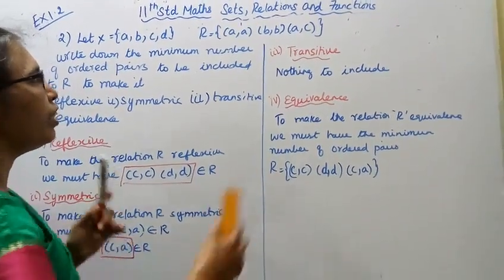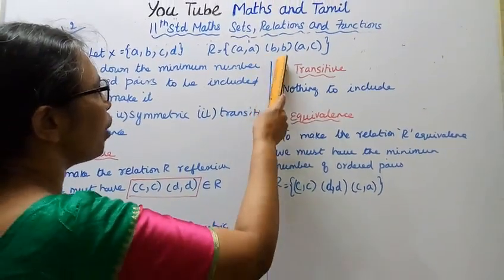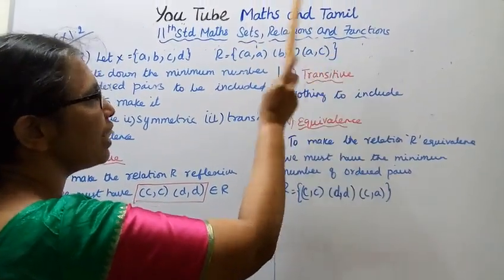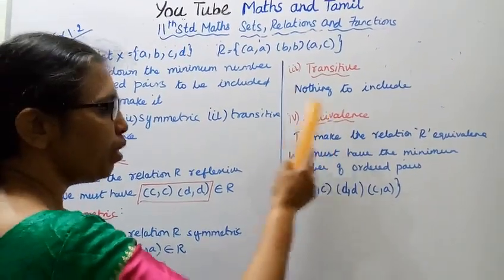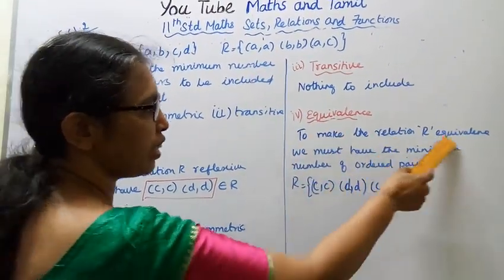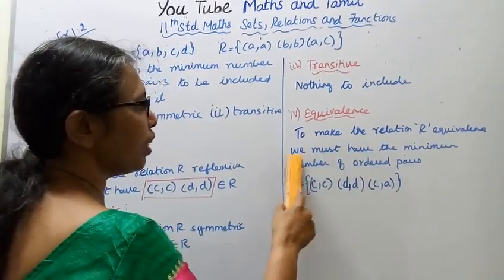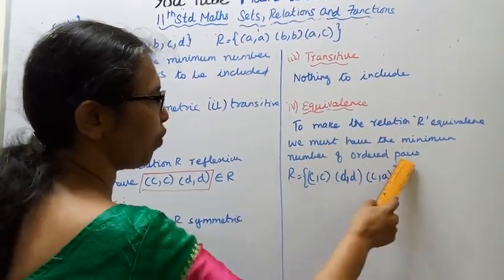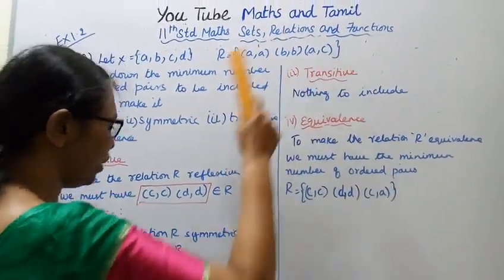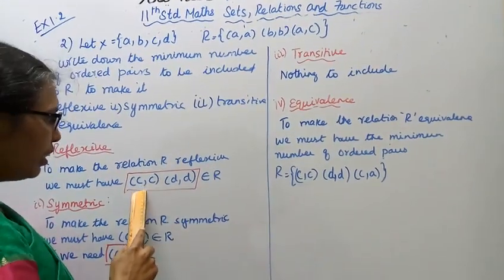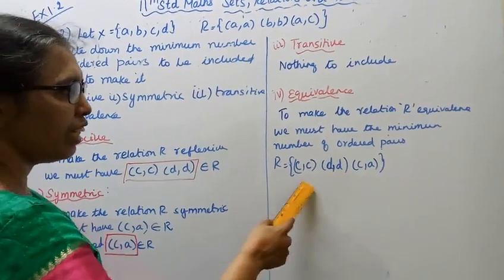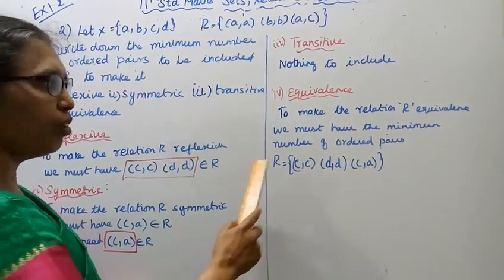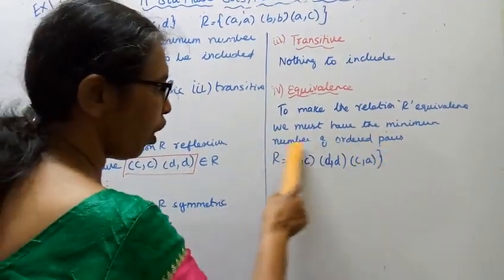Transitive: We have (a,a), (b,b), (a,c) in R, so nothing to include for transitivity. Equivalence: To make the relation R equivalence, we must have the minimum number of ordered pairs. We need (c,c), (d,d), and (c,a).